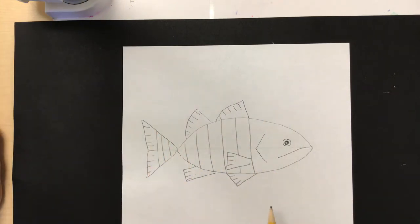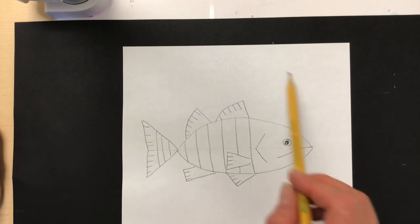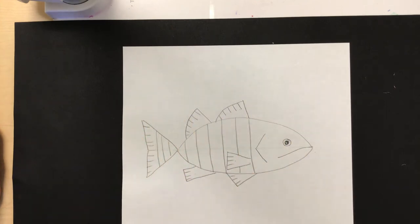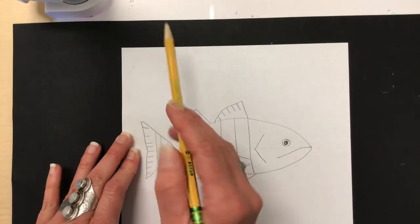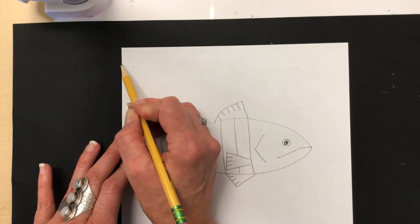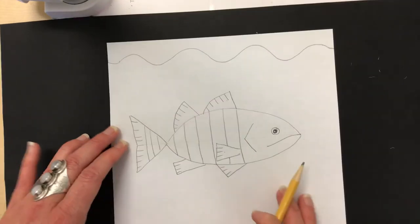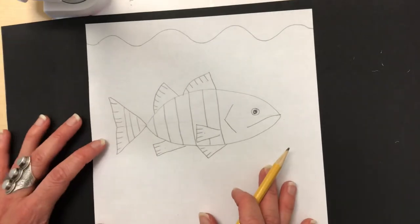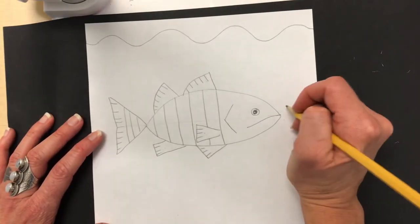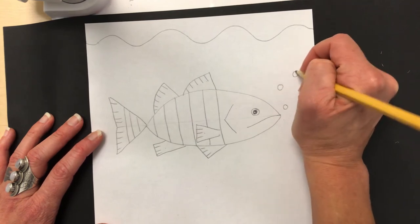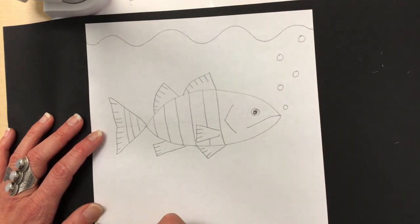Now that my fish is finished and it looks real, we need to give him a real home or habitat. Where do fish live? Of course, they live underwater. So, what I'm going to draw first at the top of my paper is a wavy line to make it look like he's underwater. Next, I'm going to draw some things that you would find underwater. Maybe some bubbles. Maybe I'll also show where the sand is or the bottom of the ocean floor.